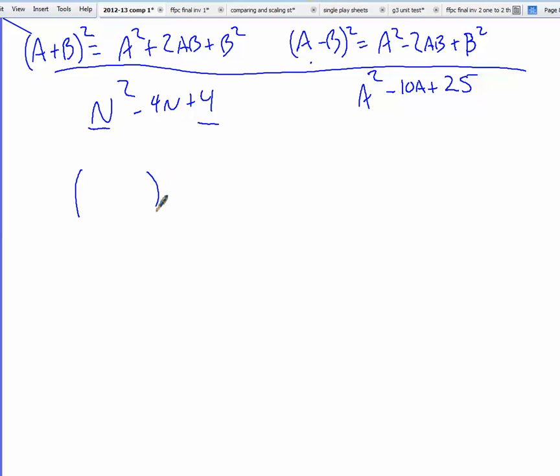So a square binomial will have one set of parentheses and it's going to be squared. The middle term sign is going to match the number that goes in the middle. So is this one going to have a plus or a minus? It's going to have a minus.